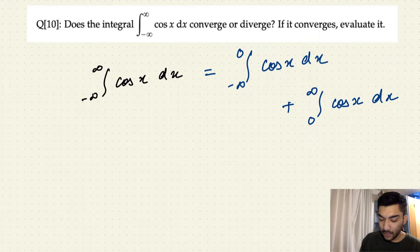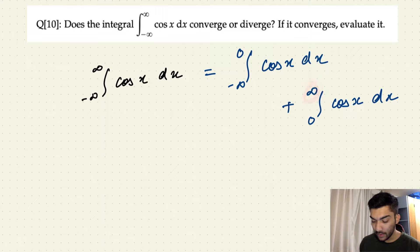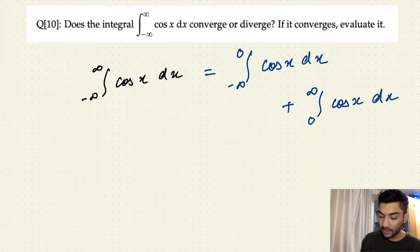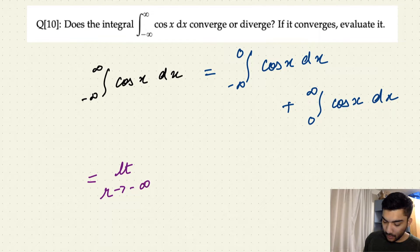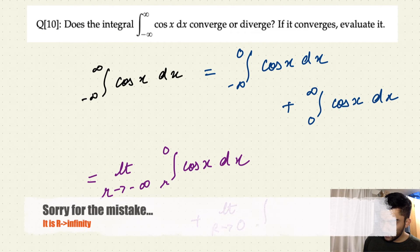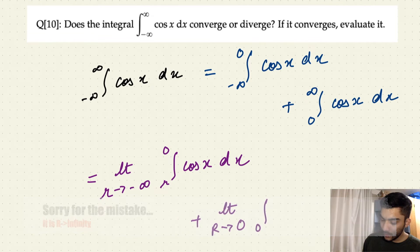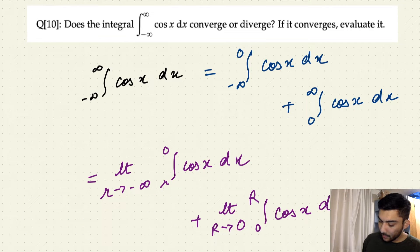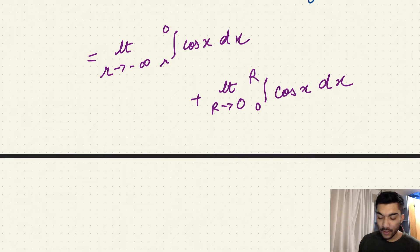We know that in between the interval for the first definite integral, there is only one discontinuity point, which is minus infinity, and in the second integral, there is only one discontinuity point, which is infinity. We can now use all the methods covered in the last video. So we take the limit as small r approaches minus infinity of the integral from r to zero of cos x dx, plus the limit as capital R approaches infinity of the integral from zero to capital R of cos x dx.